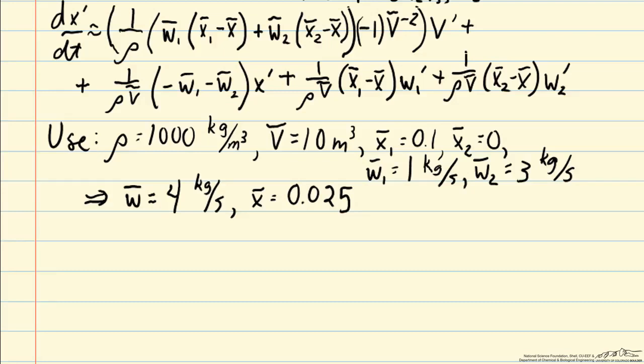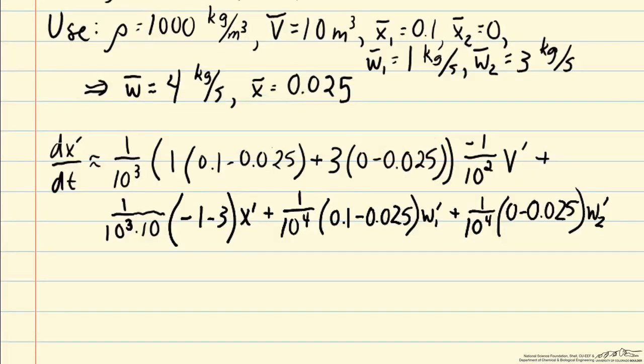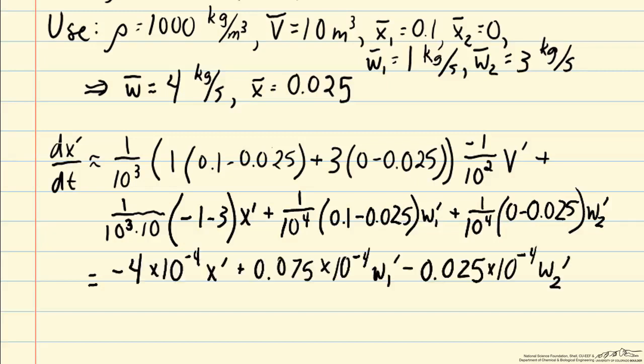Now that we have numerical values for our variables, let's go ahead and plug them in. So now we can go ahead and simplify that. It actually turns out that the V' term cancels. We have a 0.075 term here and another one here, so those two cancel out. And we actually don't have a V' term in our final equation.